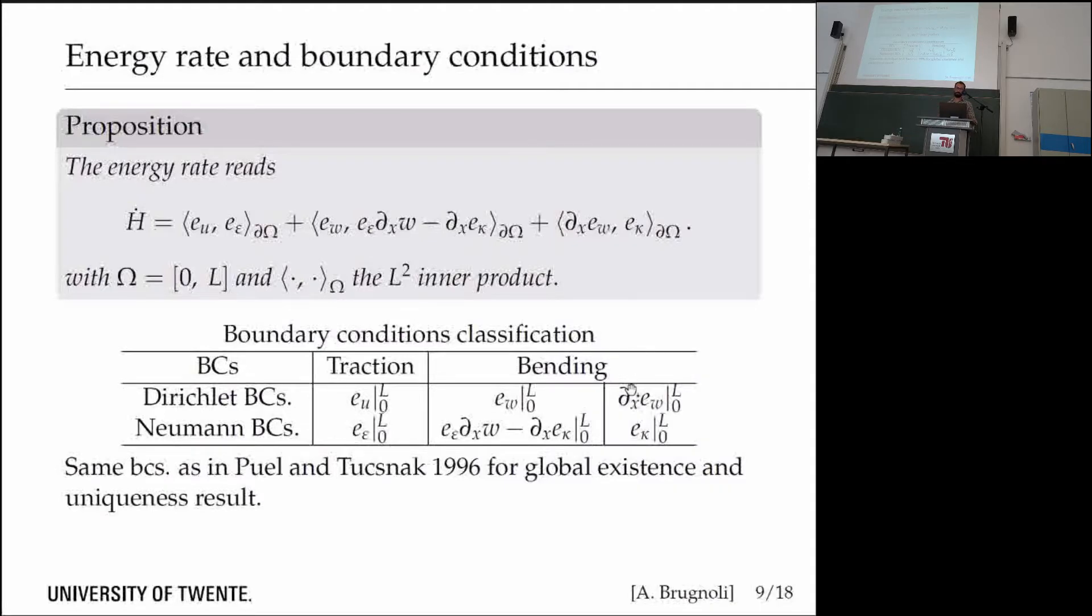For the bending, we have either the linear classical combination between the momentum at the extremities and the angle, or the vertical displacement and this combination of both membrane and bending behavior. These boundary conditions are basically the same as in the paper by Poel and Tucsnak in 1996, where they derive the global existence and uniqueness result for the full dynamics of von Kármán equations.